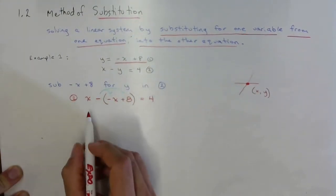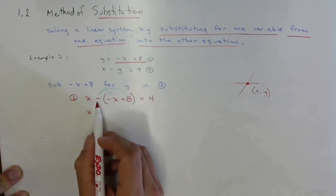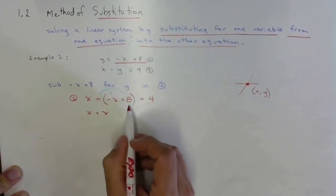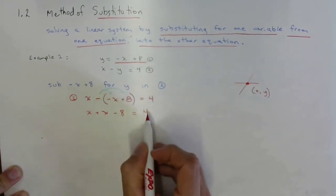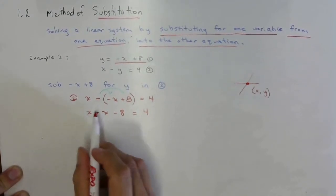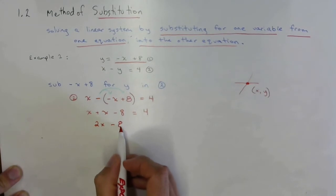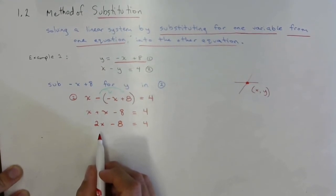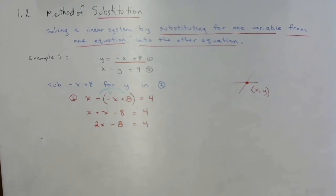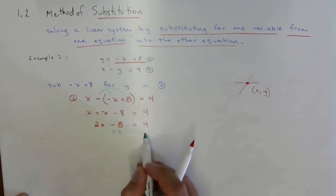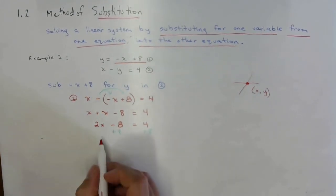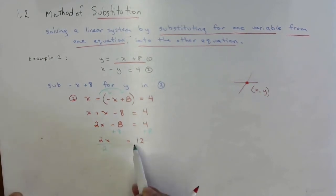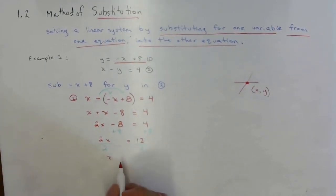Whenever you have one equation and one variable, you can solve it. We substituted to get rid of one variable — we eliminated y using the method of substitution. Now I apply the negative sign to both terms inside the group: negative 1 times negative x is positive x, and positive 8 becomes negative 8. Simplifying gives 2x minus 8 equals 4. Adding 8 to both sides: 2x equals 12, so x equals 6.